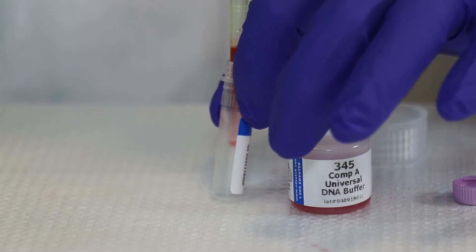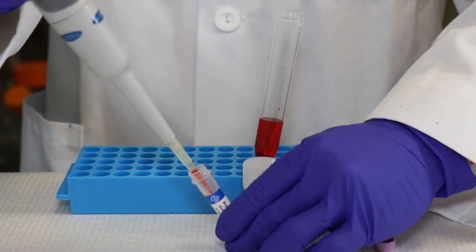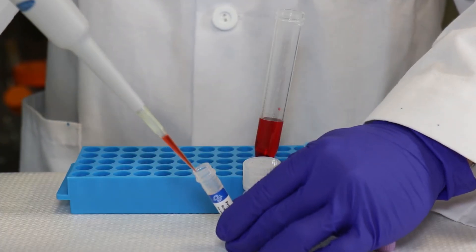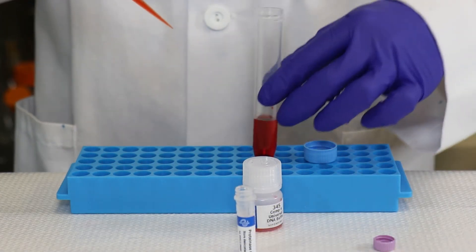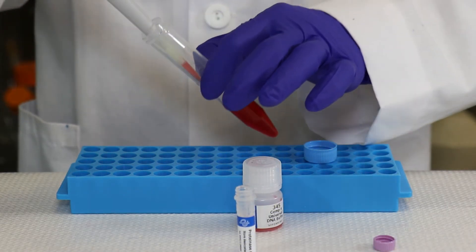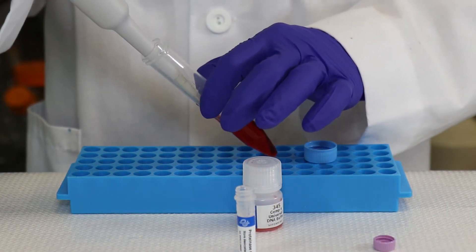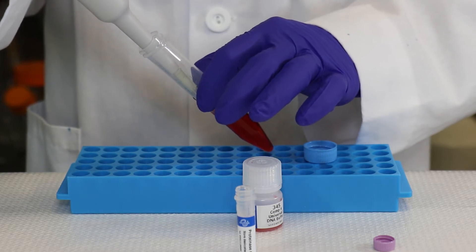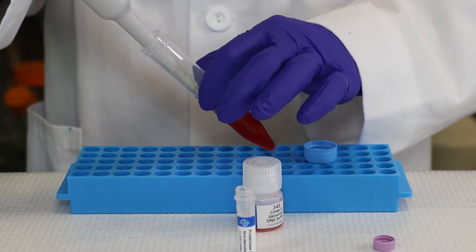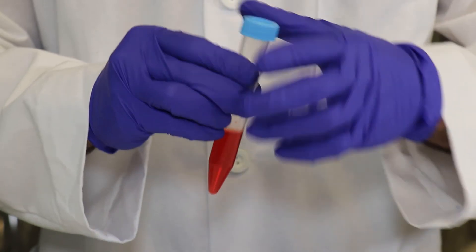Add an additional 4 milliliters of universal DNA buffer to the conical tube. Step 3: invert the tube several times to mix. Label this tube lysis buffer.